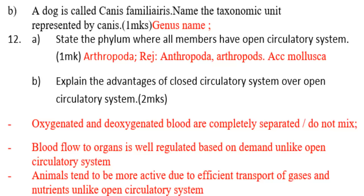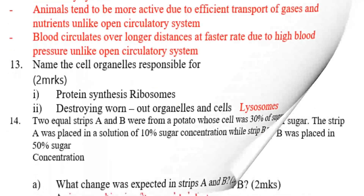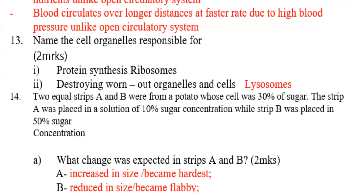Animals with closed circulatory systems tend to be more active due to efficient transport of gases and nutrients. Number four: blood circulates over longer distances at a faster rate due to high blood pressure, unlike open circulatory systems. Number thirteen: the cell organelle responsible for protein synthesis is ribosomes.